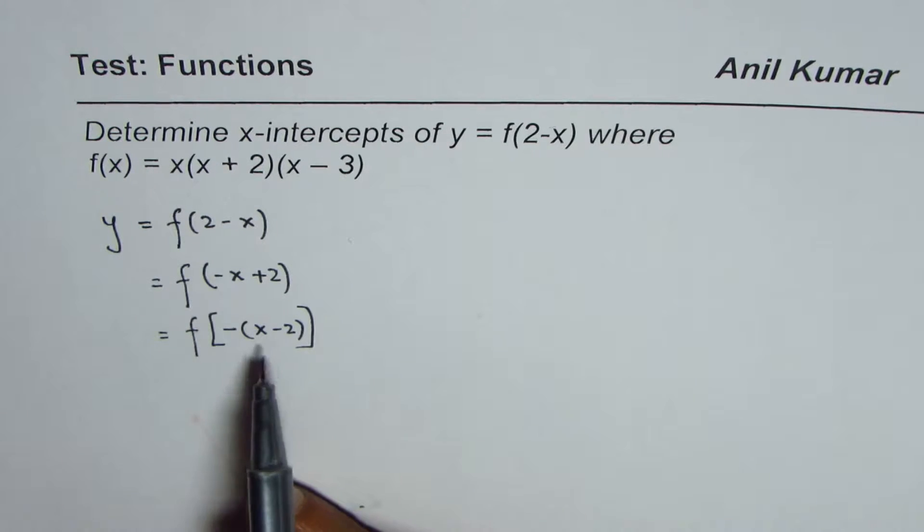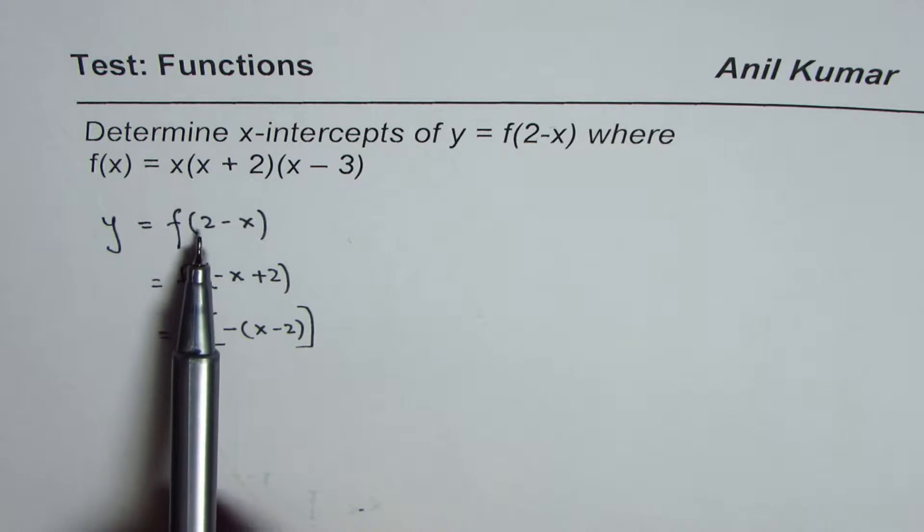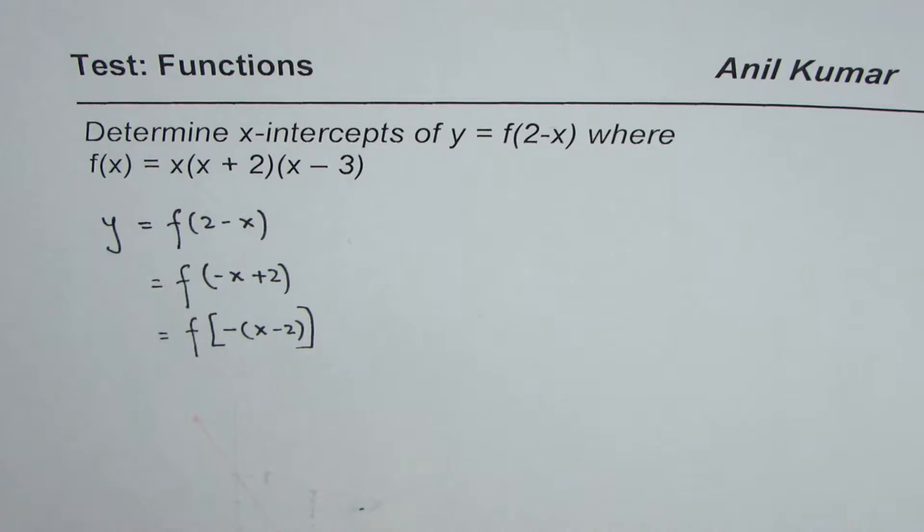I have shown you these steps since many times in the test paper I have seen students making mistake of considering plus 2 as translation 2 units left. As you can clearly see, it actually is a translation 2 units right after a reflection on y axis. Correct?